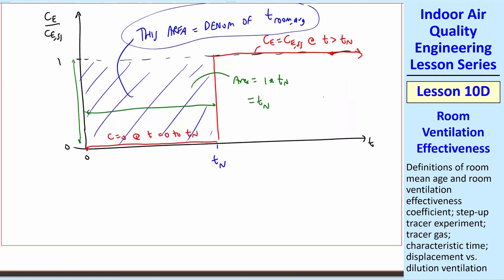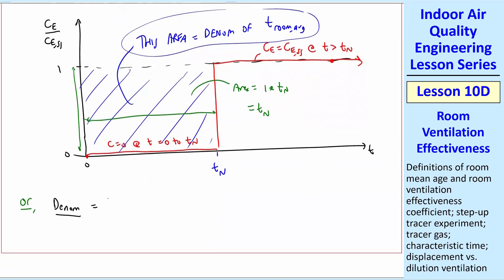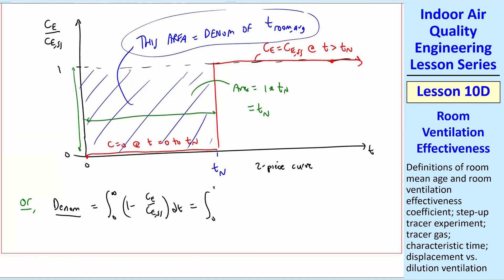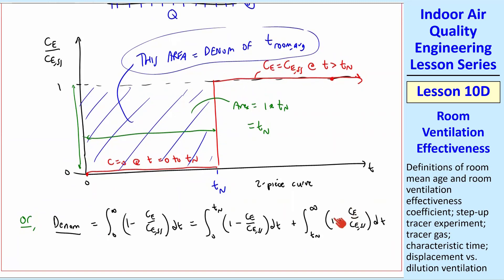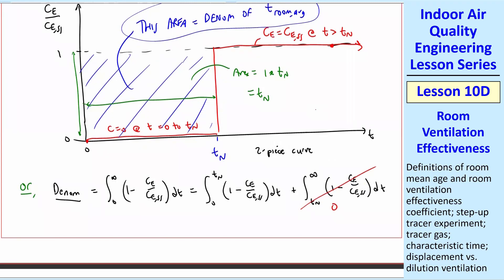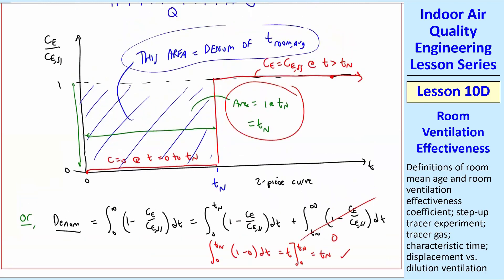In order to do this mathematically, the denominator of this T room average time is equal to integral 0 to infinity of 1 minus CE over CESS DT equal. And I'm just going to break it into pieces. So this is a two-piece curve. We would go from 0 to TN as our first piece or section, 1 minus CE over CESS DT plus integral of TN to infinity, 1 minus CE over CESS DT. So you split it up. And it should be immediately obvious that when CE is equal to CESS up here, then 1 minus 1 is 0. So this whole term is 0. We don't even have to worry about it. And this one, you can integrate, and this would be 1 minus 0. So that's just integral of DT, which is T itself, and then you evaluate the limits equal TN. So I've proved mathematically what I can see graphically, that that area, the denominator, is just TN.